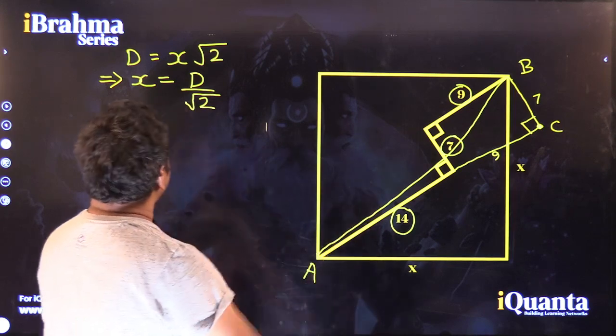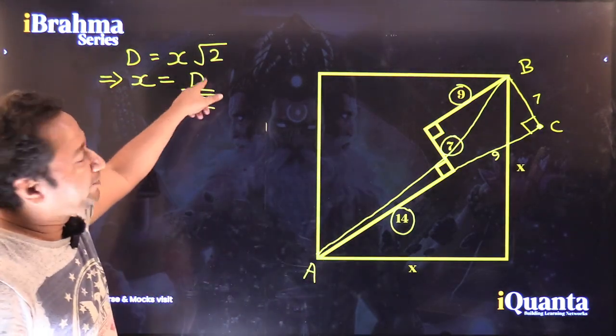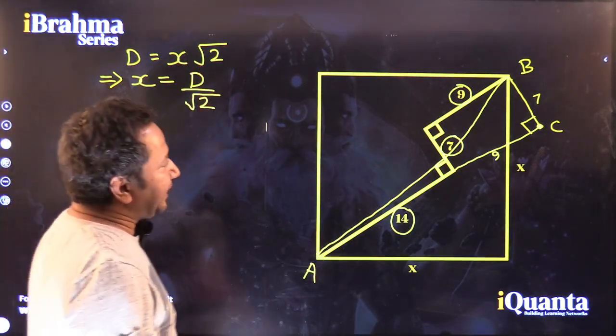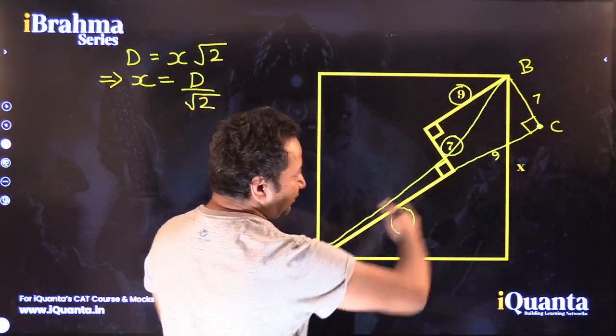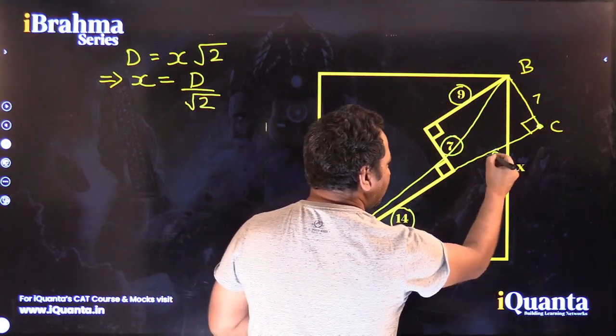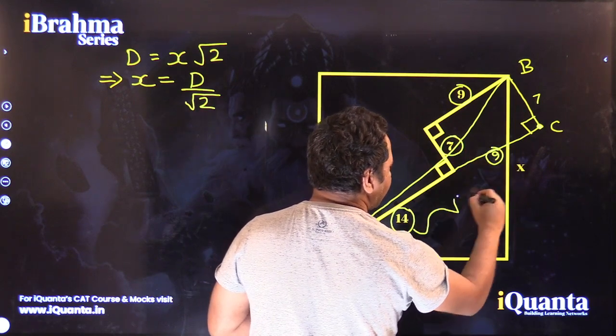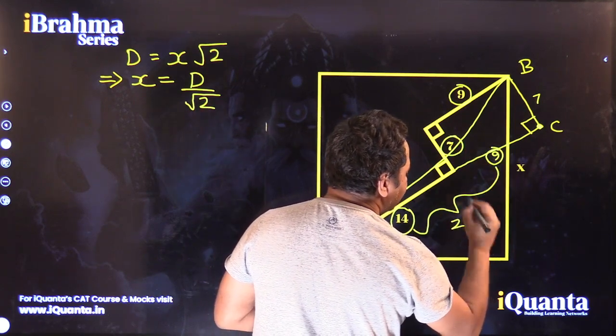Now, the length of AB is basically what we have to calculate and that will be the value of the diagonal. BC is what we already have, that is 7 units. And the length of AC is 14 plus this 9, which will come out to be 23 units.